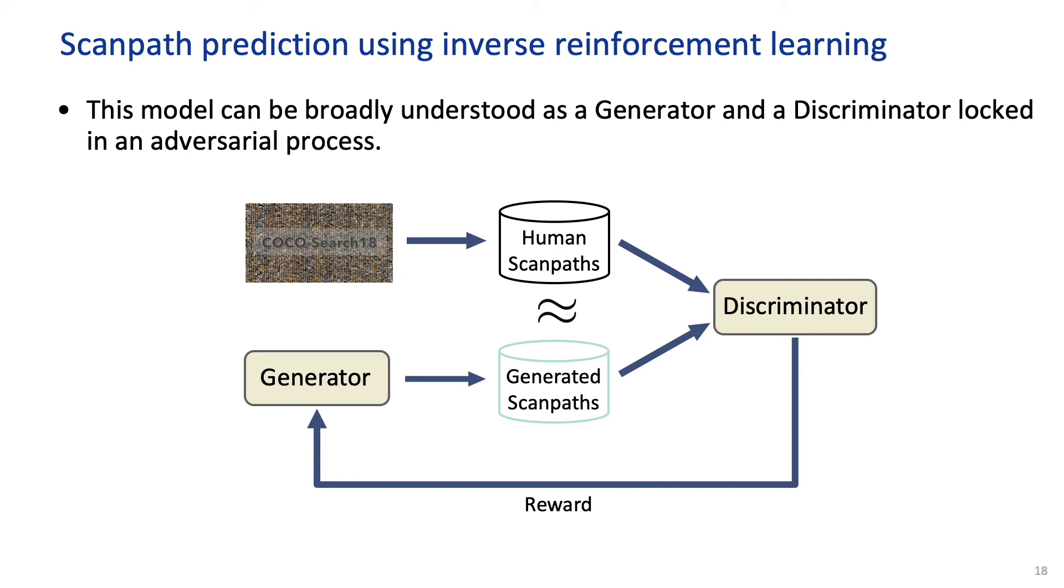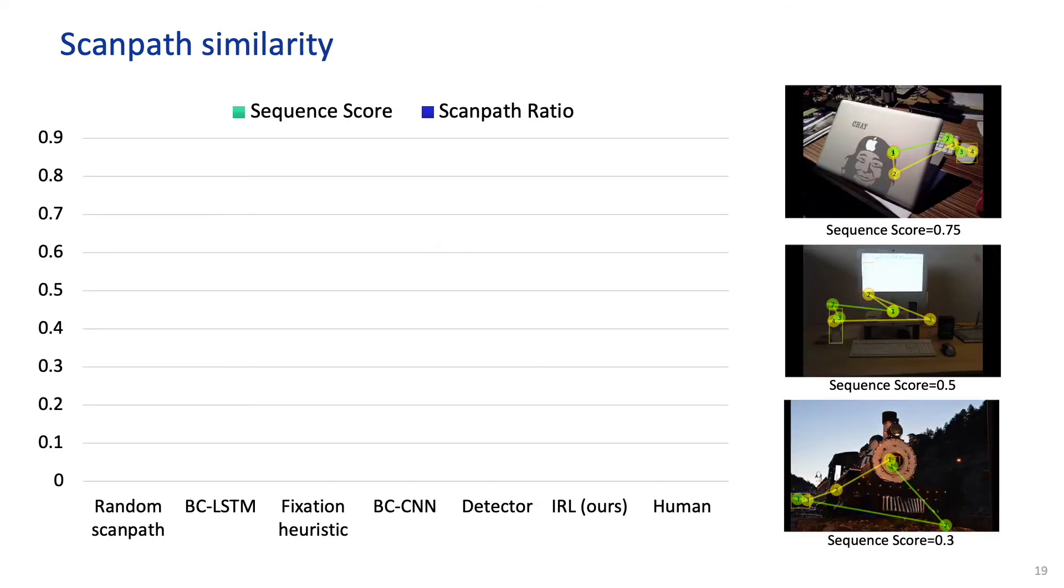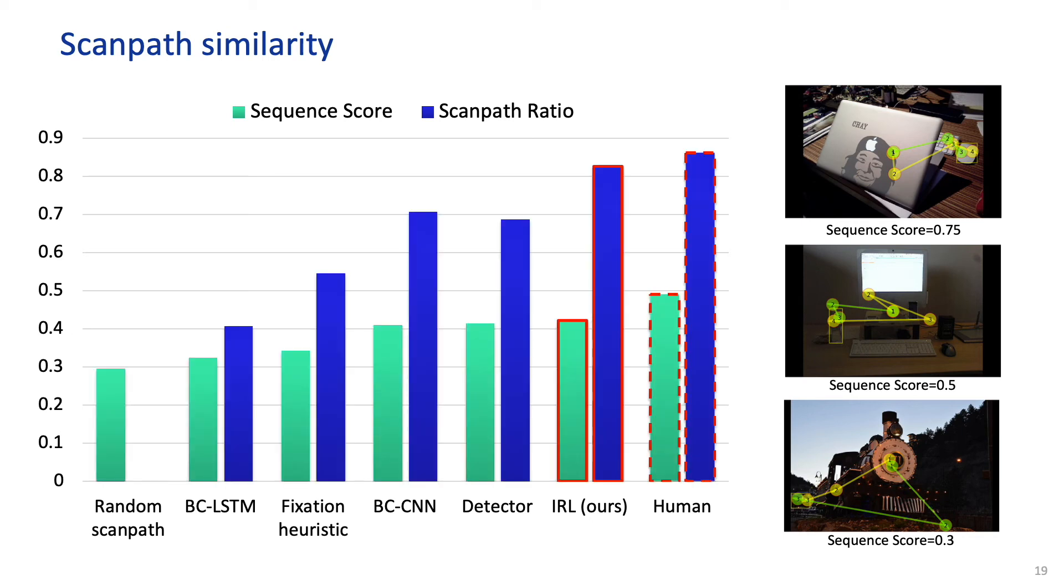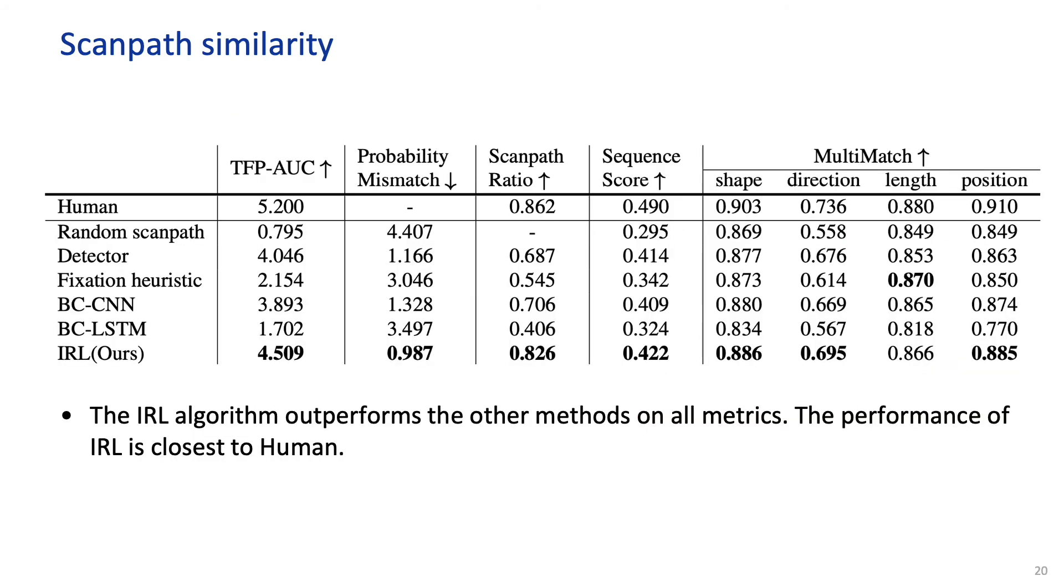At that point, we will have a scan path generator that can imitate human gaze behavior. To measure the performance, we use sequence score and scan path ratio to compute the scan path similarity between the prediction and the ground truth. Our approach is the closest to human oracle and outperforms all other methods. We also measure the scan path similarity using other metrics. Our model performs the best on all metrics.